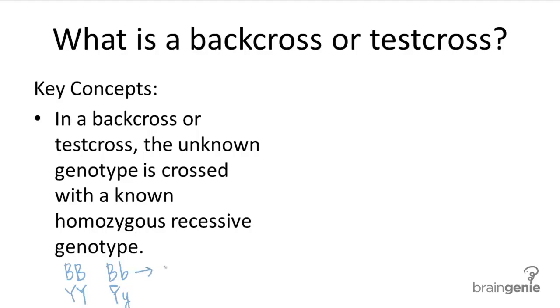So for these two examples, you'd have an unknown brown-eyed person crossed with a blue-eyed person, which isn't as realistic, or an unknown yellow pea individual crossed with a green pea individual.